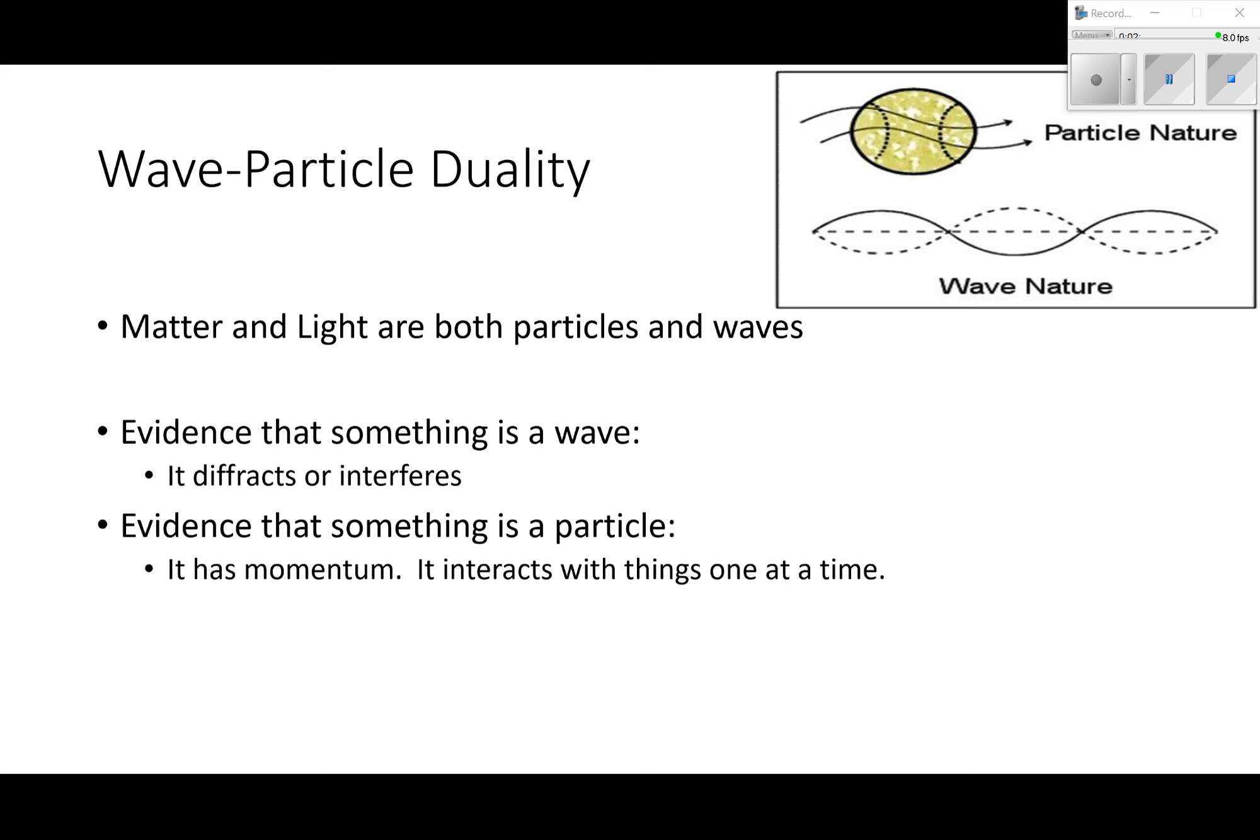We have the ball there - its particle nature and the wave nature. Evidence that something is a wave is it does stuff that waves do, like diffraction and interference. Those are things we learned about with the wave unit. If something does something that we learned about in the waves unit, that's evidence that it's a wave. Evidence that something is a particle - it has momentum, and more importantly, it interacts with things one at a time. You could, it'd be difficult, but you could count the number of photons that strike a surface. It's something that you could count.